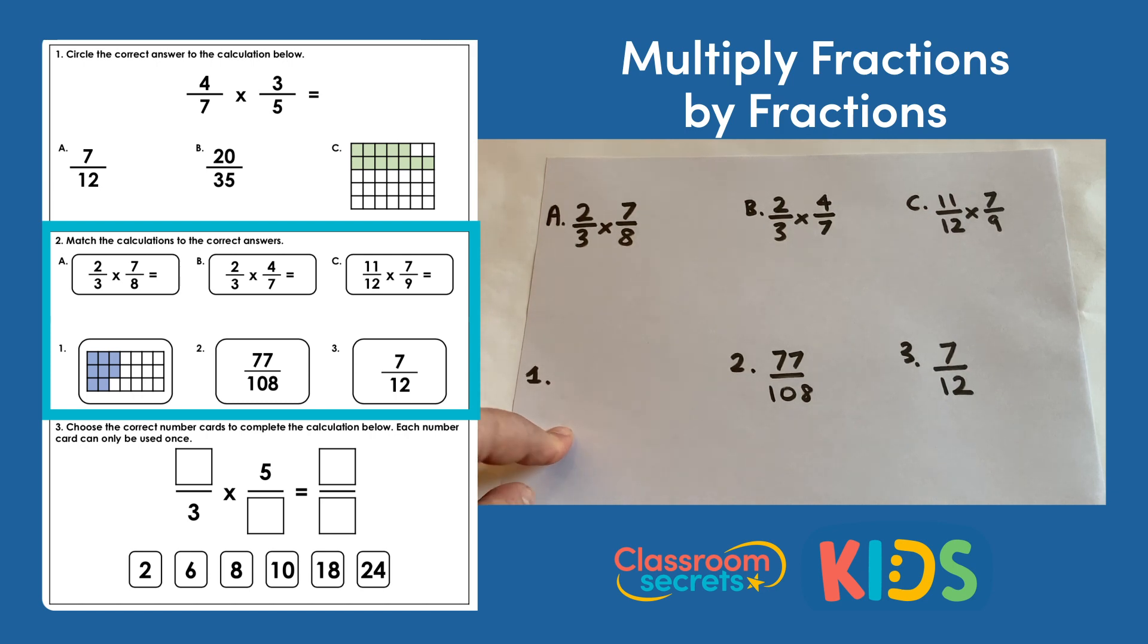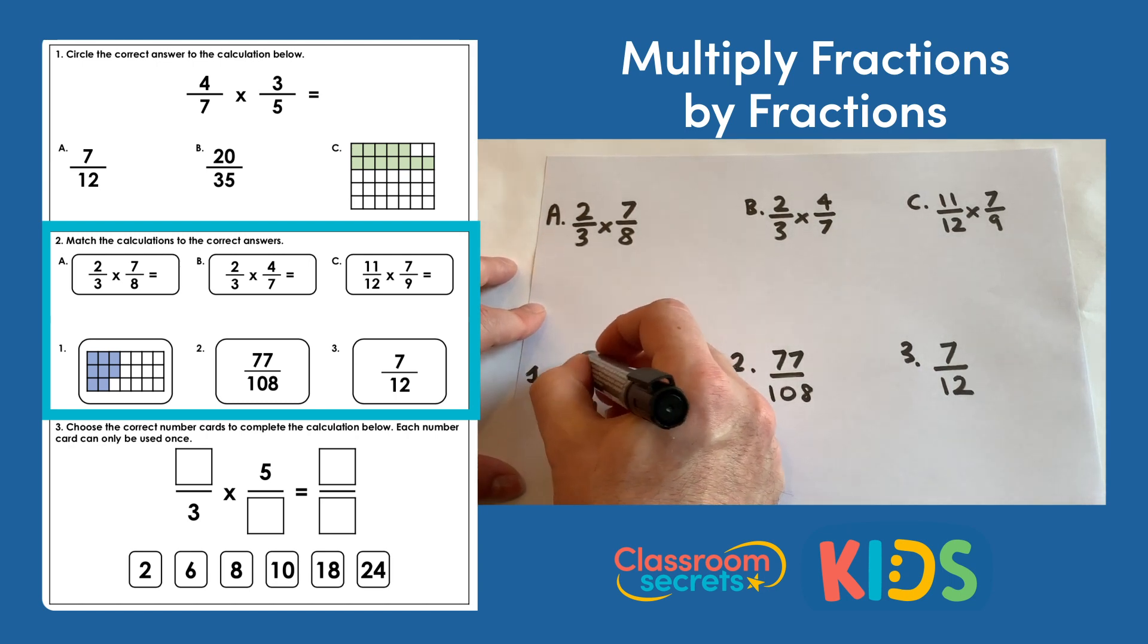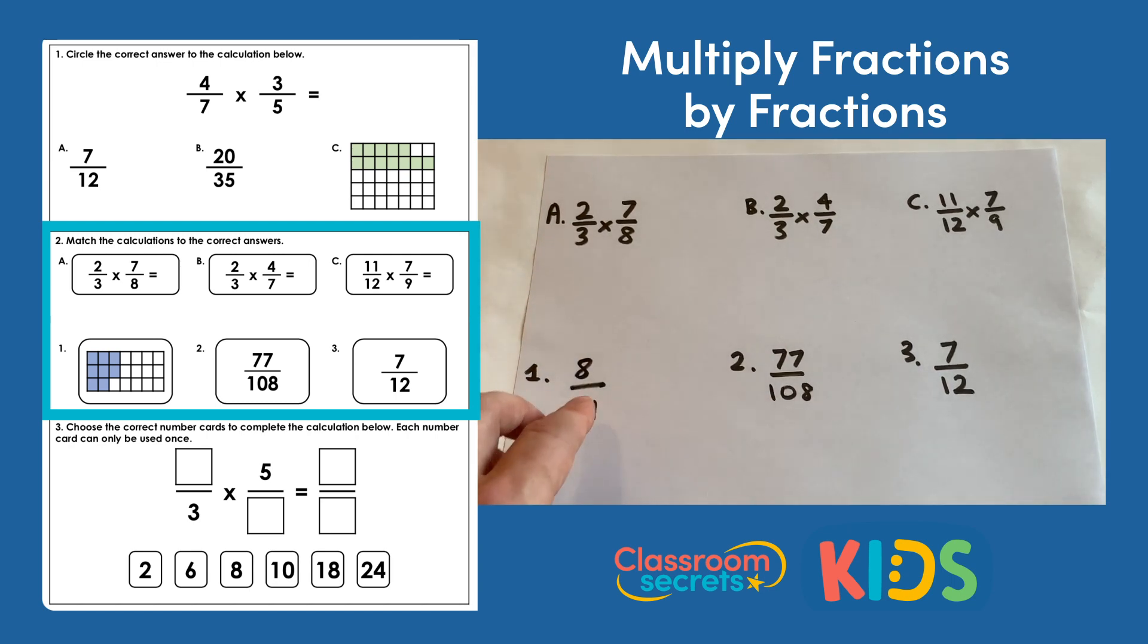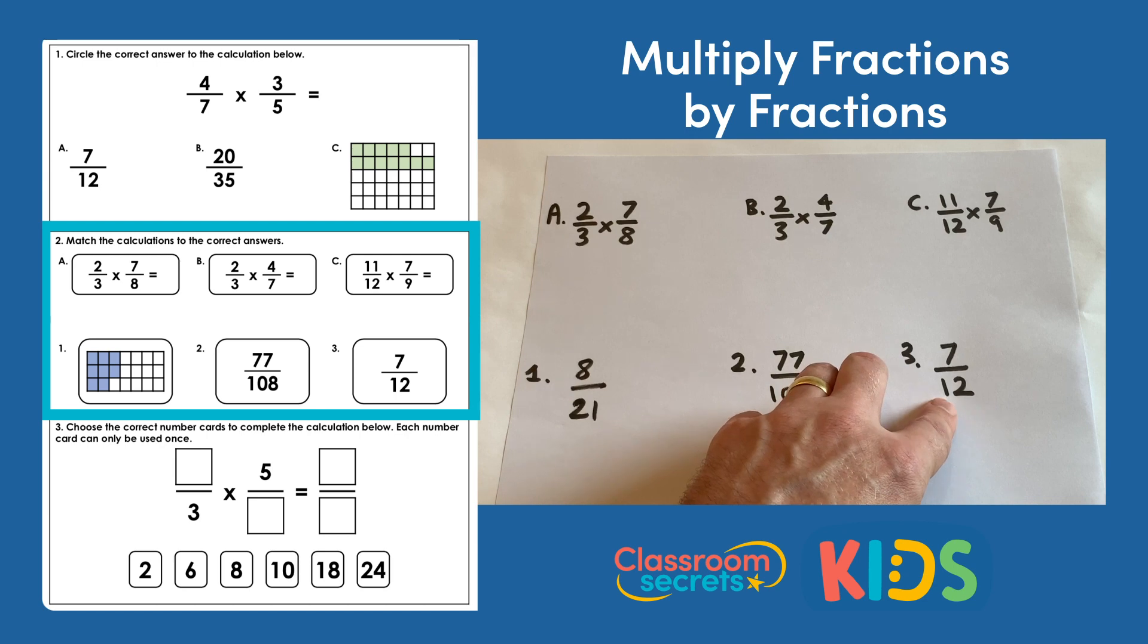One is represented by a diagram. If you look at the diagram, the shape of the whole is split into 21 equal parts, so the denominator of our fraction will be 21. There are 8 of those parts shaded in, so the fraction there would be 8/21. Fraction two: we've got 77/108, and C: we have 7/12.